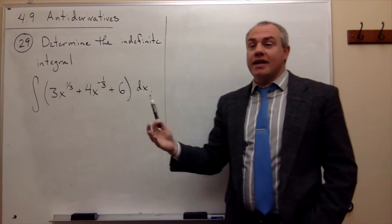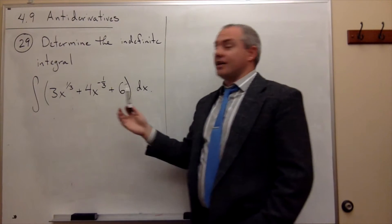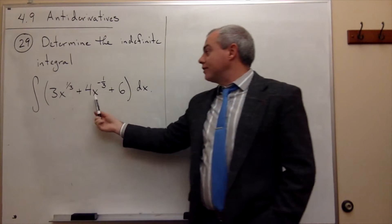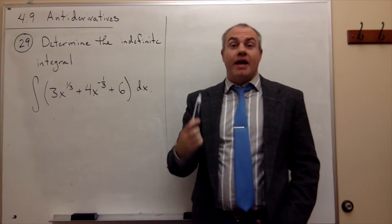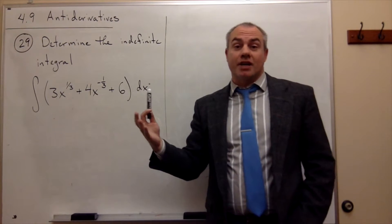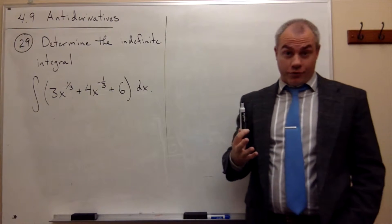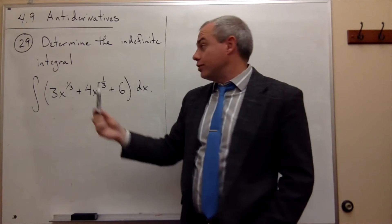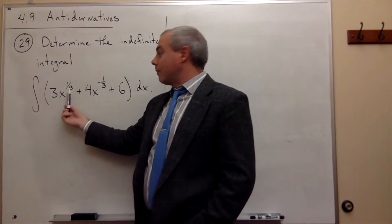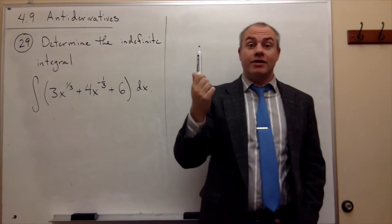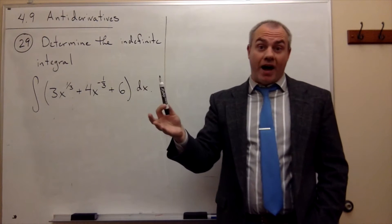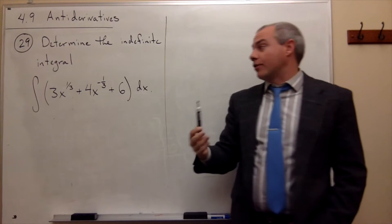So when I take an anti-derivative of something like this, I just want to take the anti-derivative of each of these terms separately, and each of these terms I can use kind of the reverse of the power rule for differentiation to get my anti-derivative. So what I want to do is on each of these, since I have x to a power, I want to add one to the power, and then divide by the new power, whatever the new power is.